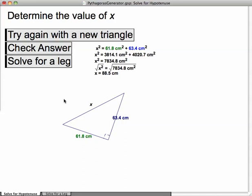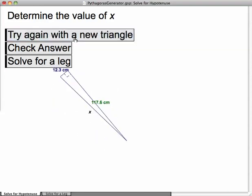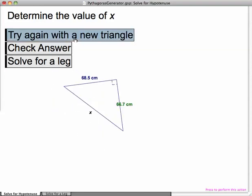It's not really a dynamic sketch in that they can change it around, but it does generate, if they click here try again, an infinite number of triangles that they can practice using Pythagorean theorem on.